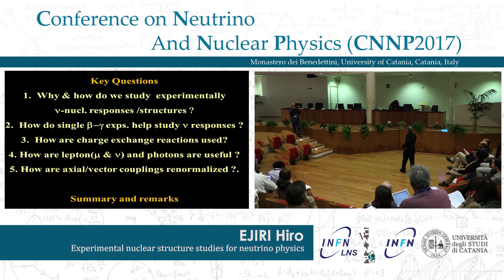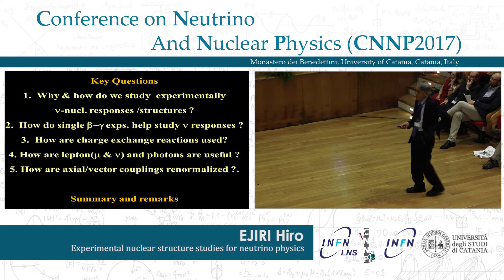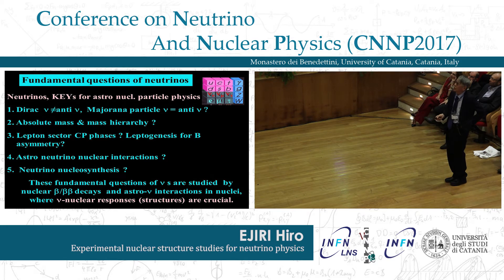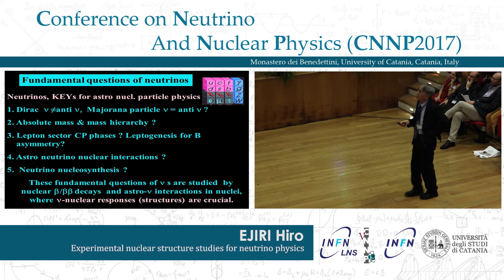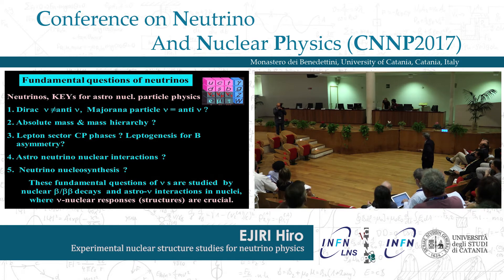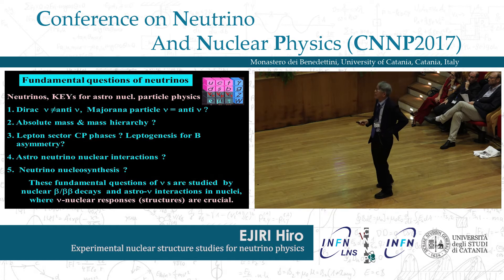Why and how do we study experimentally nuclear responses? As already discussed, the major neutrino questions — because the neutrino is really a key particle of particle, nuclear, and astrophysics — include neutrino properties like Dirac-Majorana nature, absolute mass scale, leptosector CP phases, leptogenesis, astro-neutrino-nuclear interactions, and neutrino-nuclear kinematics. These fundamental questions are studied by investigating nuclear beta, double beta decays, and astro-neutrino interactions in nuclei, where neutrino nuclear responses and nuclear structures are crucial.